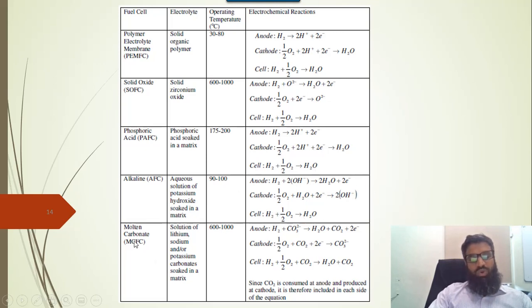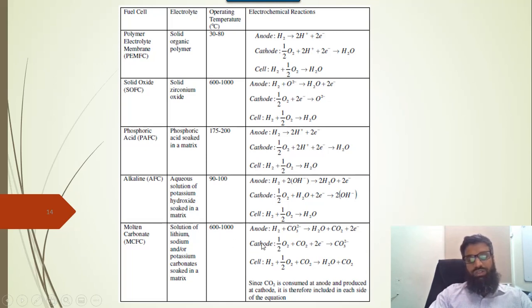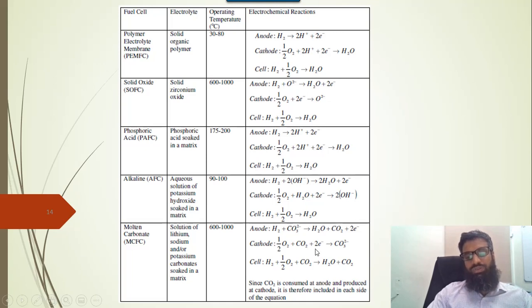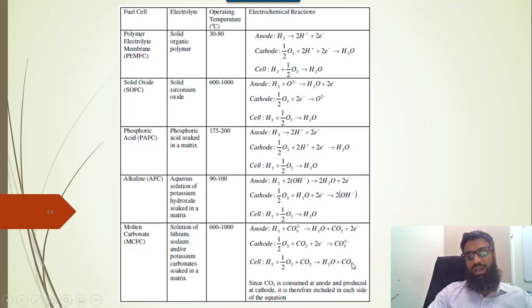Then we have molten carbonate fuel cell. Its electrolyte is a solution of lithium, sodium, and potassium carbonate soaked in a matrix. Its operating temperature is 600 to 1000 degrees Celsius. It normally uses hydrogen plus carbon dioxide — basically CH4 — as an input. Its output produces H2O plus CO2 plus 2 electrons, and that 2 electrons plus carbon dioxide on the cathode side produces CO3²−. The full reaction: hydrogen + half O2 + CO2 → H2O + CO2.